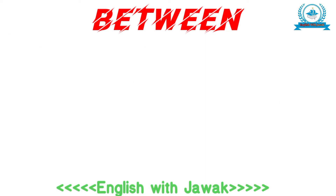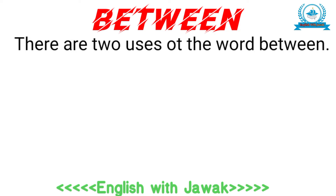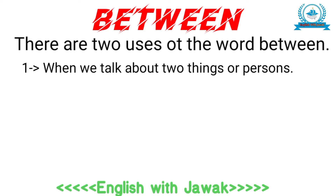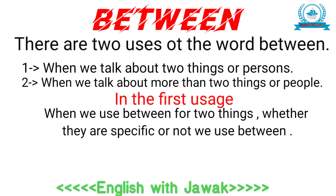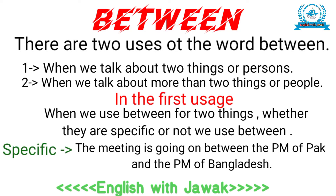تو سب سے پہلے between کو دیکھتے ہیں۔ between کے دو استعمالات ہیں۔ پہلا استعمال اس صورت میں ہے جب ہم دو چیزوں یا دو بندوں کی بات کریں، اور دوسرا استعمال اس صورت میں ہے جب ہم دو سے زیادہ چیزوں یا لوگوں کی بات کریں۔ پہلے استعمال میں وہ دو چیزیں یا بندے specific ہوں یا نہ ہوں، دونوں صورتوں میں ہم between کا use کریں گے۔ مثال: 'The meeting is going on between the Prime Minister of Pakistan and the Prime Minister of Bangladesh.'